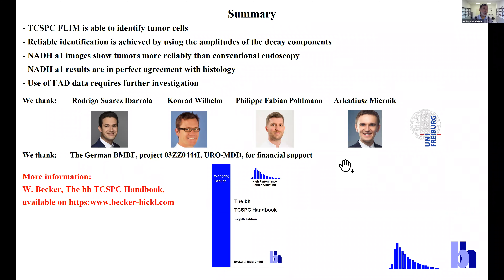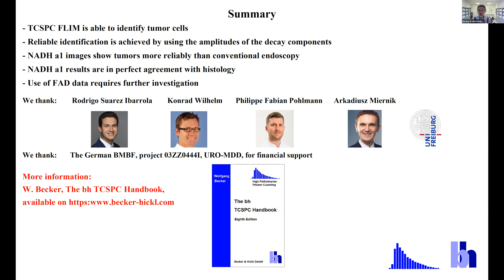In summary: we believe TC-SPC FLIM is able to identify tumor cells, with the amplitudes A1 providing reliable identification. The A1 images show tumors more reliably than conventional endoscopy, and the results obtained so far are in perfect agreement with histology. The use of FAD data requires further investigation. We thank our colleagues from the University Clinics Freiburg and the German BMBF for financial support. For more information, please consult our TCSPC handbook. Thank you for your attention.